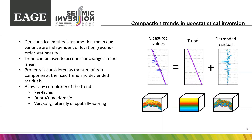If there is no significant trend observed in the data, a constant mean value can be used for the properties. However, when there is a vertical trend, the systematic change in the mean of the properties needs to be included. The approach used to solve this problem is quite simple. It considers each property as a sum of two components: the fixed trend, which is the same for all realizations, and the trended residual. This approach allows the use of trends at any level of complexity.